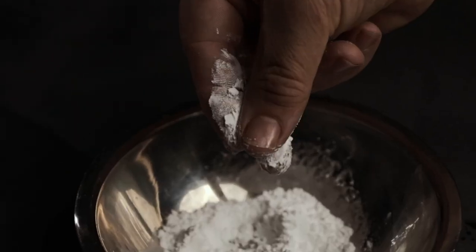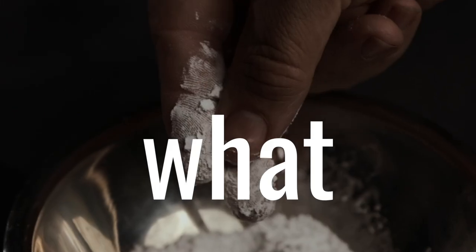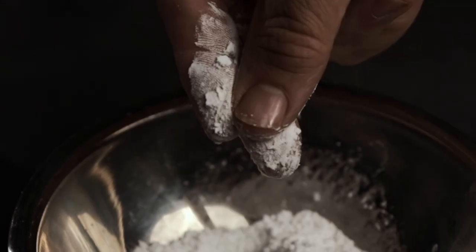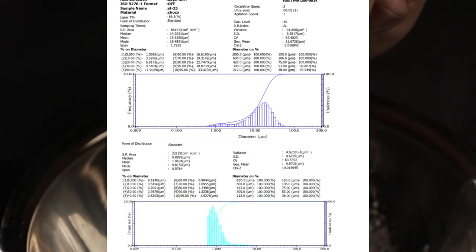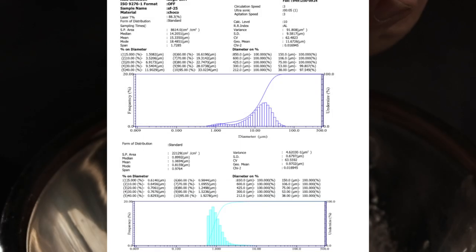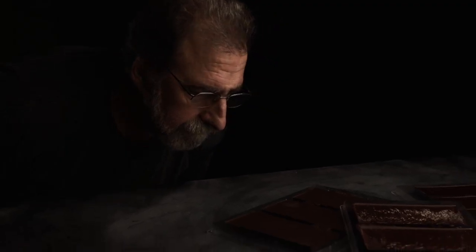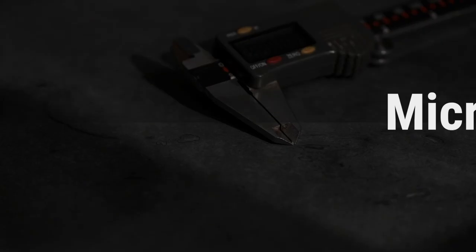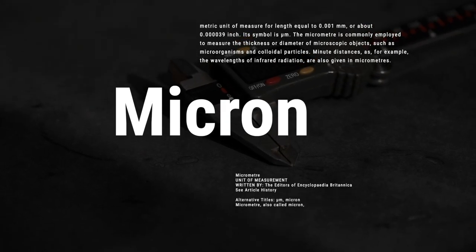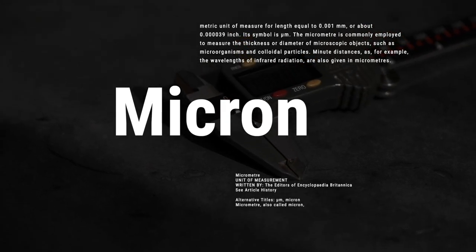The problem is that superfine is a qualitative assessment. What is superfine? What you need is a quantitative assessment — basically, you need a number. It's often said that chocolate should have a particle size between 15 and 25 microns. But what does that really mean? Do you even know what a micron is?